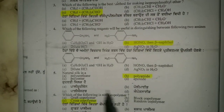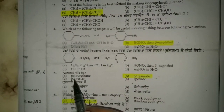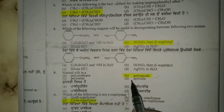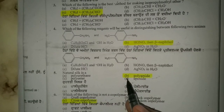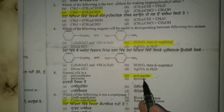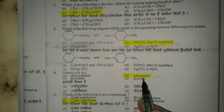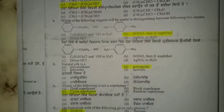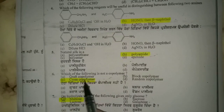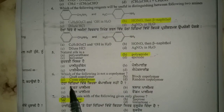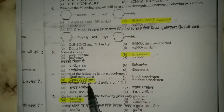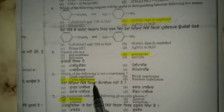Question number five: natural silk is a — polyamide. Next, number six: which of the following is not a co-polymer? The correct answer is option C — cross co-polymer is the right option.